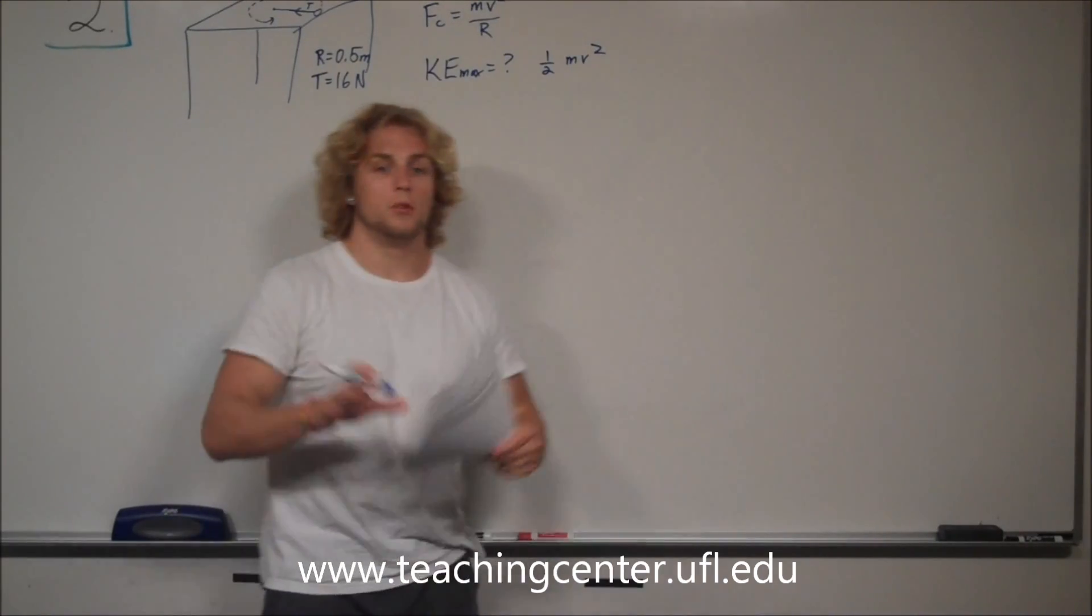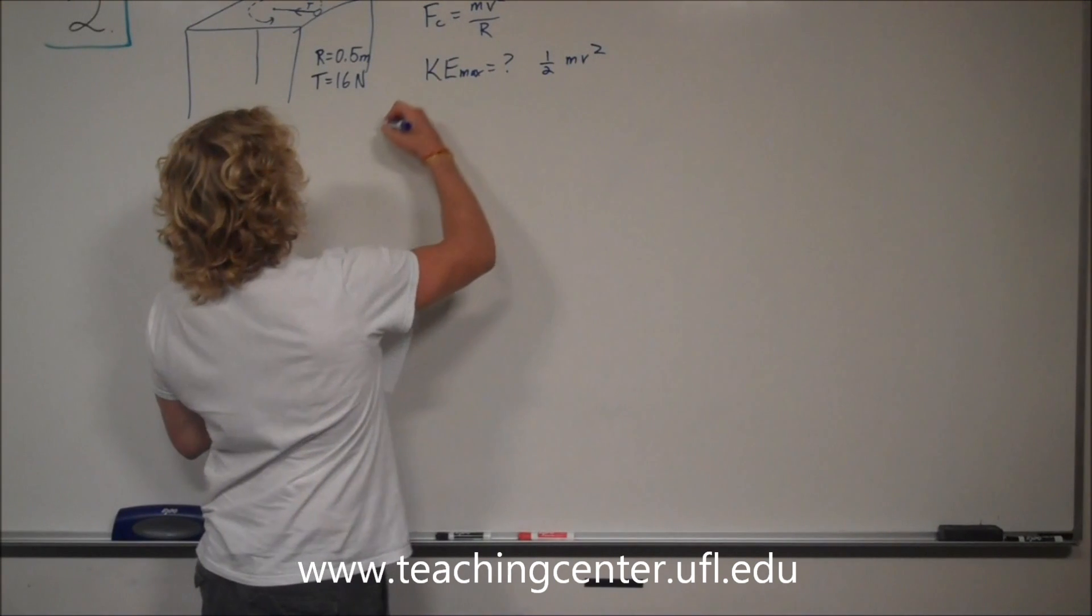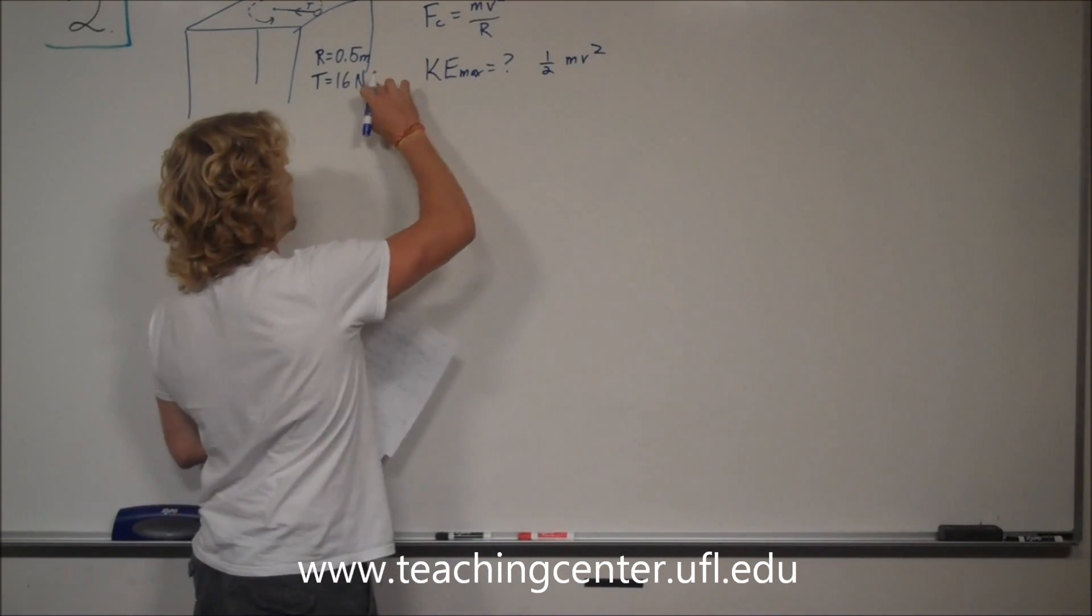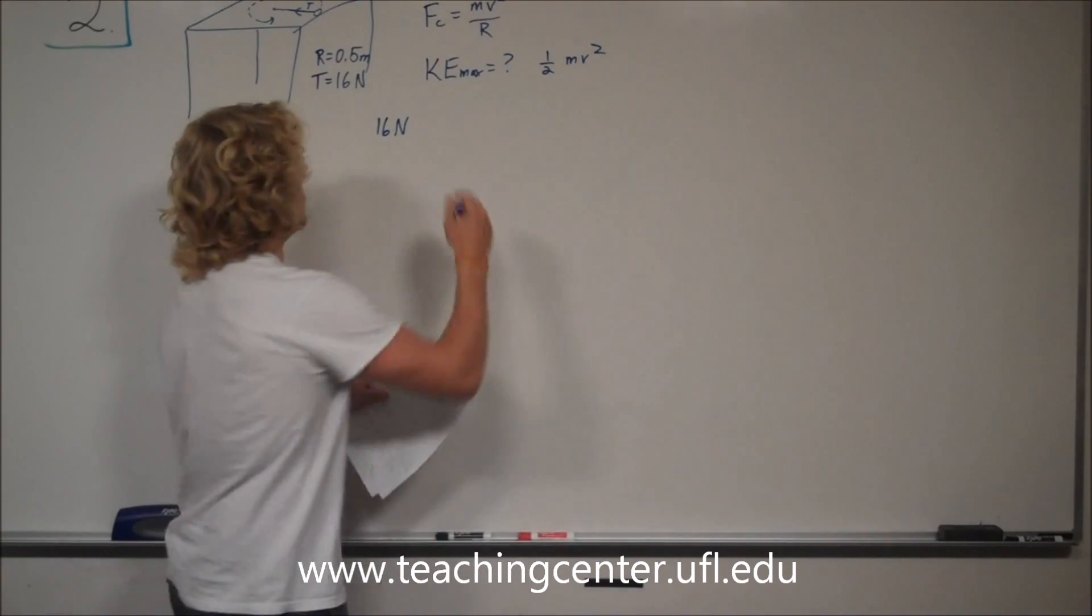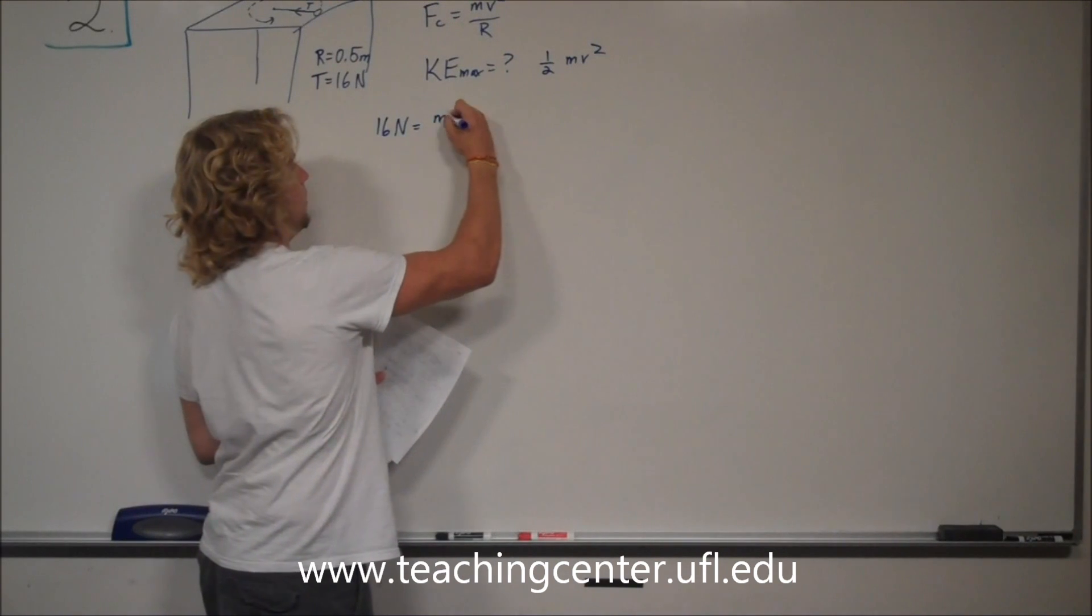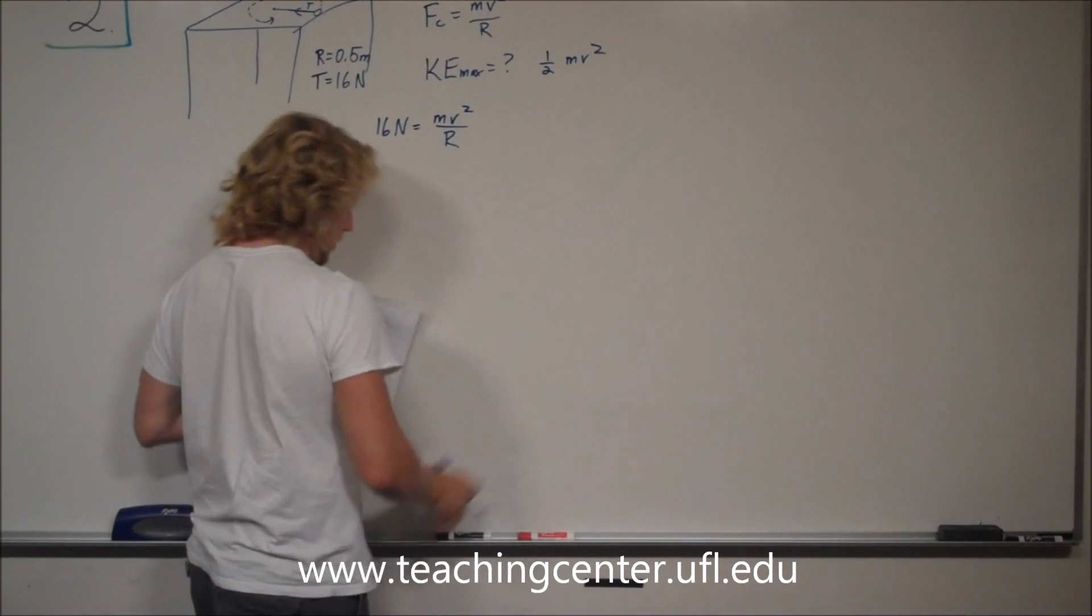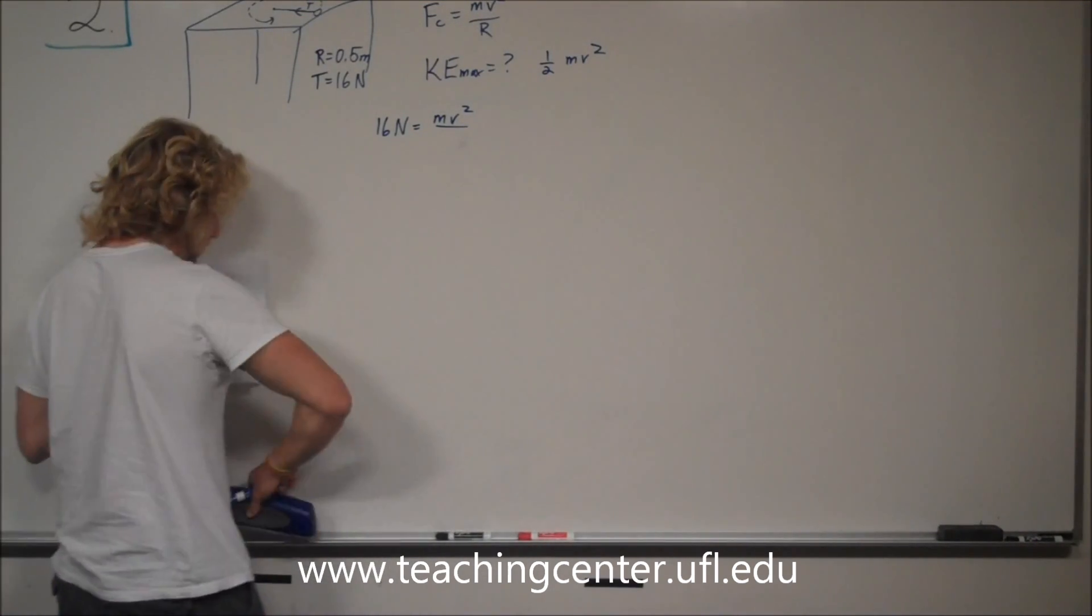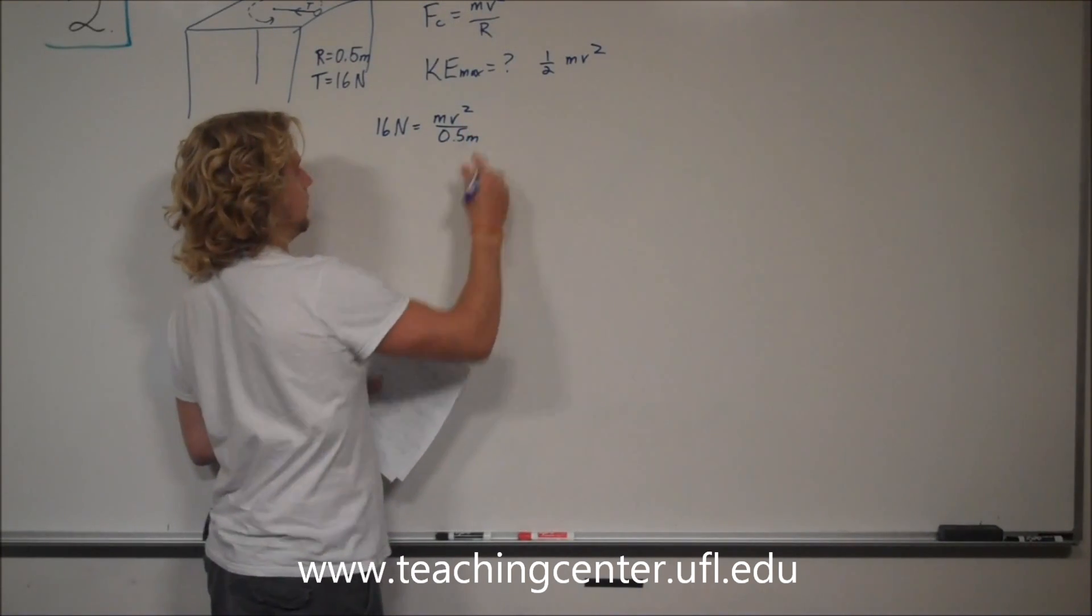We're just going to have to manipulate things a little bit. We know that 16 newtons is the tension, and the tension is what the centripetal force is. Centripetal force and tension are the same thing. So 16 newtons equals mv squared over r. Now we know what r is, so let's go ahead and put that in there. r is 0.5 meters.